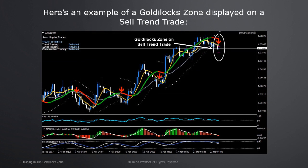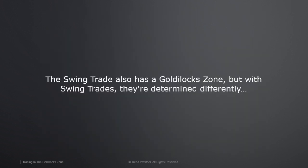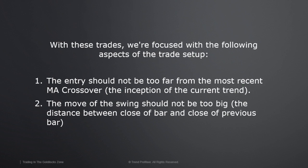Here is a sell example for a Goldilocks trend trade zone. Based on all of the criteria being validated, we wanted the price to fall not higher than a certain level — a certain distance away from the fast moving average — and we didn't want the price to fall lower than the too-far level. So again, not too far, not too close, but just right. Whether it's a buy or a sell, you only have to put in the indicators once.